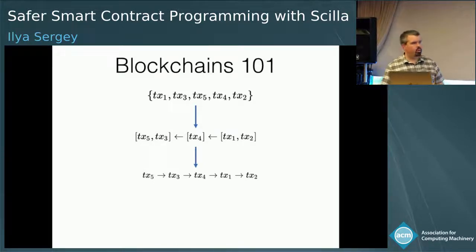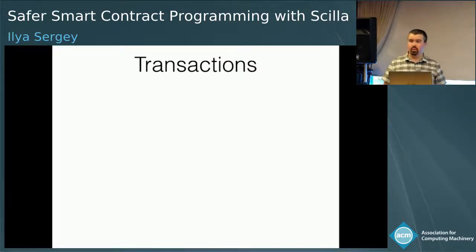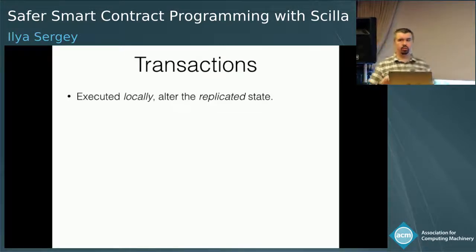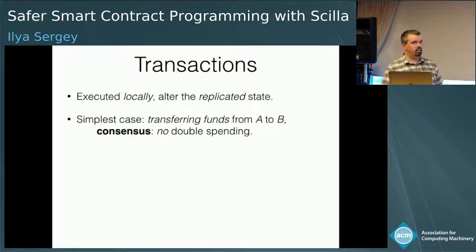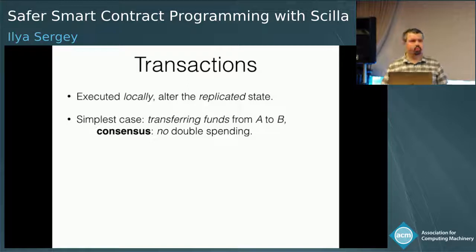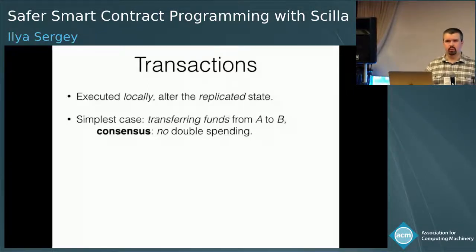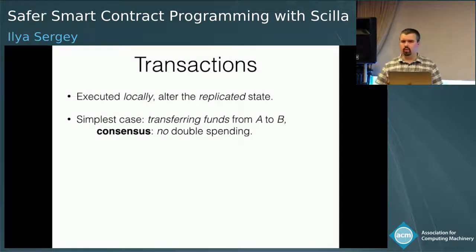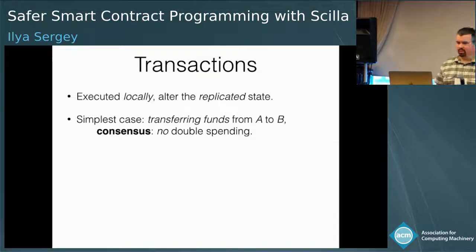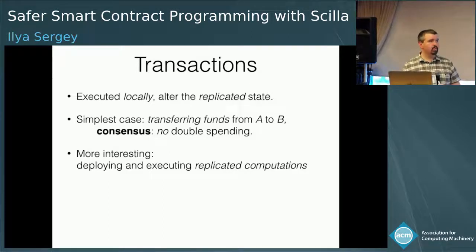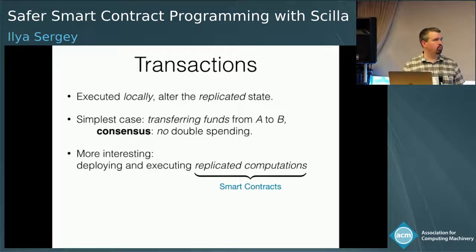Why is this an interesting technology and why are people so excited about it? The idea is what exactly can we express as those transactions that we agree upon. Transactions are simple computations executed locally, and they alter the replicated state that all parties involved in the protocol have. In the simplest case, transactions from the world of finance are just transfers of funds between accounts. We need a distributed consensus protocol to prevent double spending — all parties need to agree who paid whom and how much, and that the same currency hasn't been used twice. Some people realized you can do proper replicated computations using the same mechanism, and those replicated computations are nowadays referred to as smart contracts.